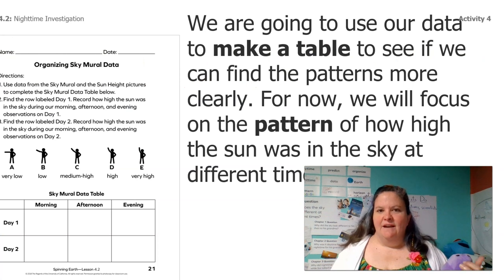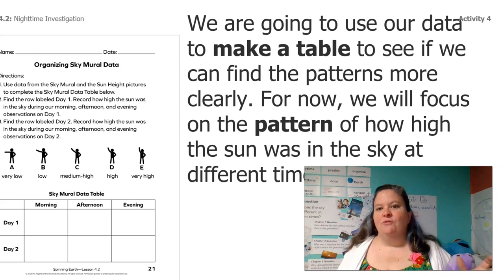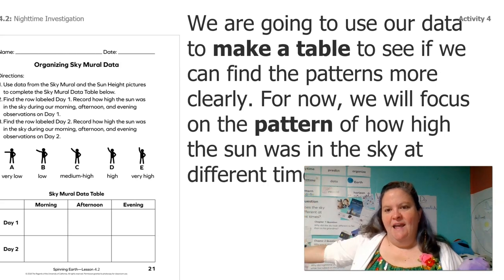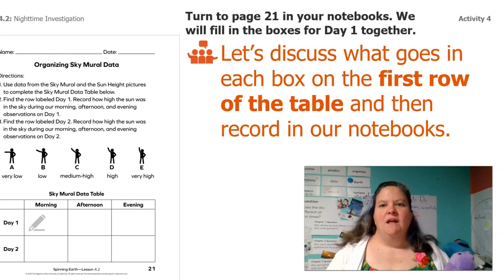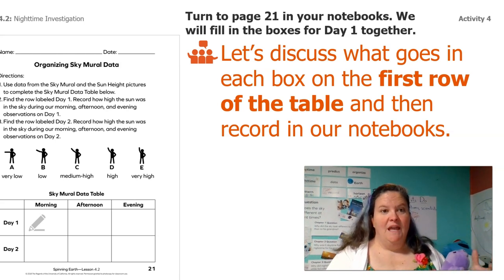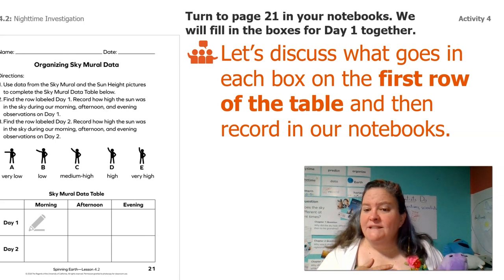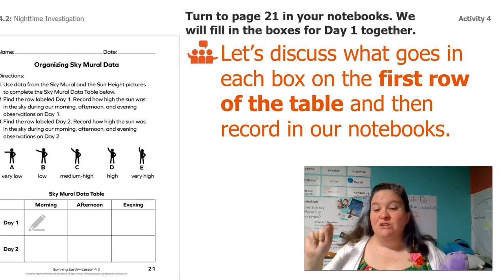We're going to use our data to make a data table just like Laura did to see if we can find the patterns more clearly. We're going to focus on the pattern of just how high the sun was in the sky at different times of day. Let's discuss what goes in each box on the first row of the table and then we'll record it in our notebook. We need to be looking at our sky mural and our sky mural data table at the same time. Some of you might have this sky mural data table if you got the packet or notebook. But if you don't have the notebook or packet, it's totally fine — you can just write your answers on a blank piece of paper.